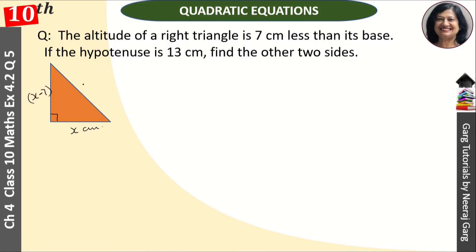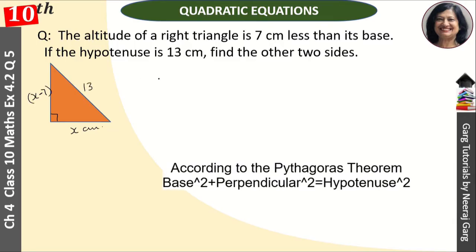Hypotenuse is 13. So now we will put the Pythagoras theorem. The formula of Pythagoras theorem is base square plus perpendicular square that is equal to hypotenuse ka square.